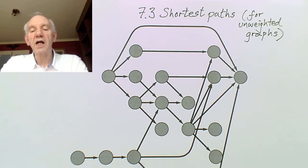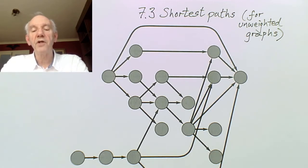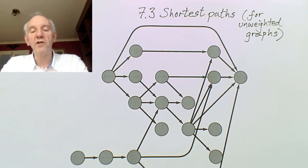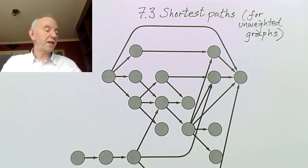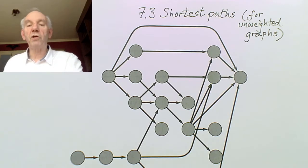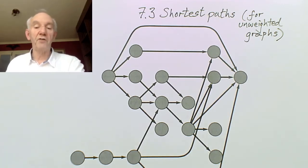But instead of writing down numbers in a queue, because here nothing has been labelled to start with, we're just going to write down the number of steps we need to get to each vertex. So it's really just an application — this special case is just an application of a breadth first search.